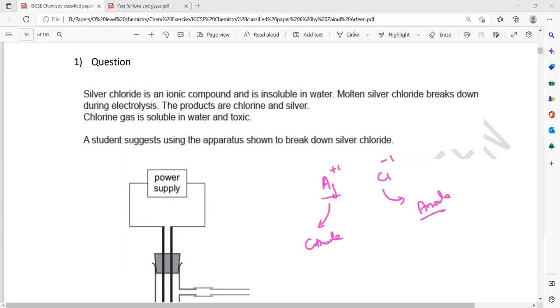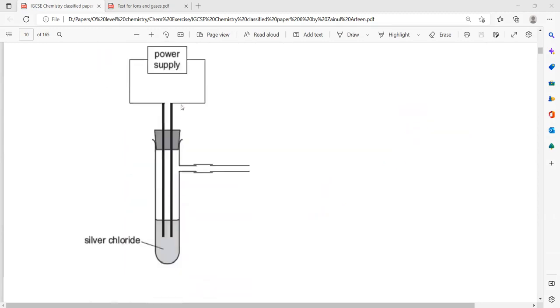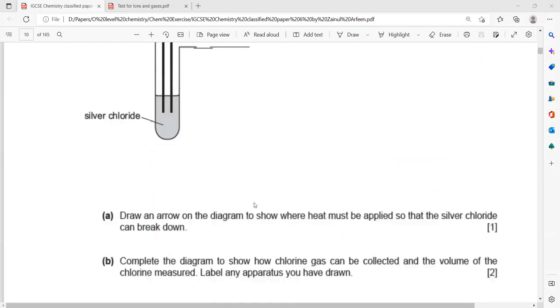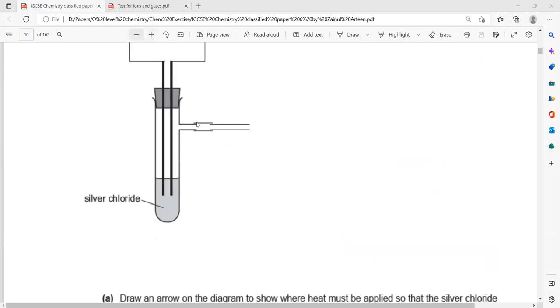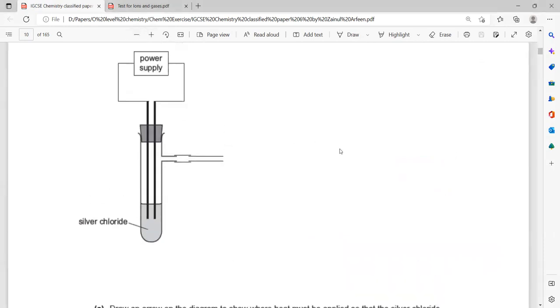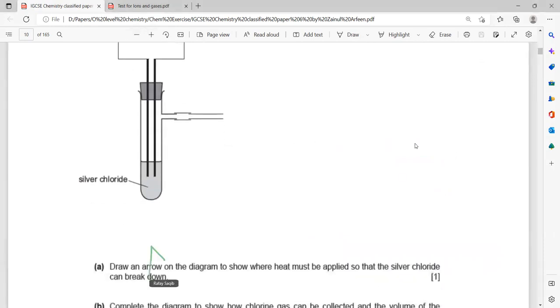You can see this is what the student drew. Draw an arrow on the diagram to show where the heat must be supplied. You can use the screen annotation to complete. We should supply heat energy from the bottom. Any one arrow is enough to show that heat energy is supplied.